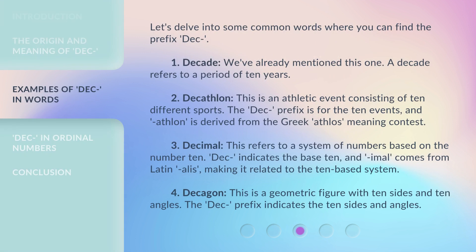Let's delve into some common words where you can find the prefix DEC. First: DECADE — we've already mentioned this one. A DECADE refers to a period of 10 years. Second: DECATHLON. This is an athletic event consisting of 10 different sports. The DEC prefix accounts for the 10 events, and -ATHLON is derived from the Greek ATHLOS, meaning contest.